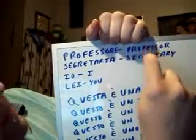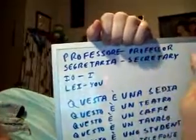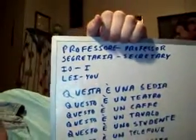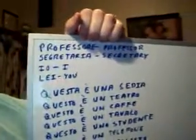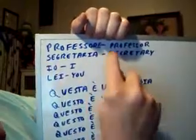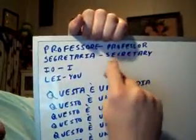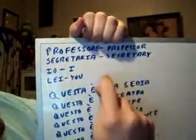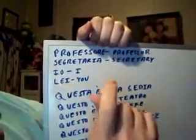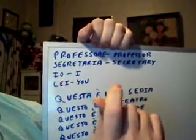Now we have some vocabulary for today. Professore is your professor. Segretaria is your secretary. Io is the pronoun for I. And lei is the pronoun for you.